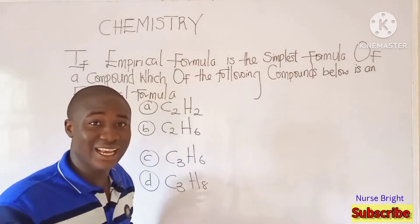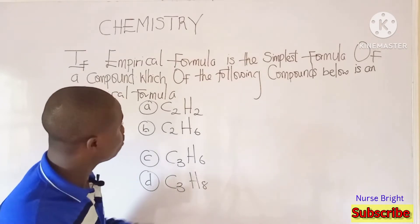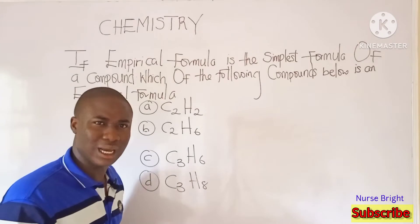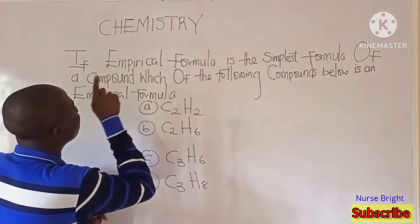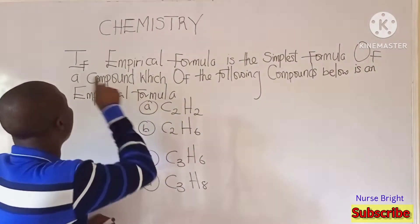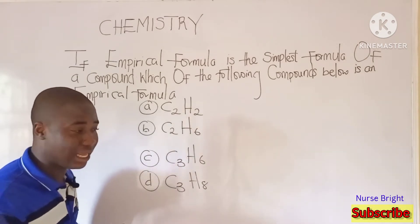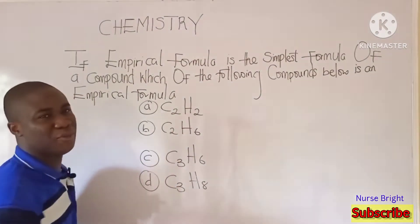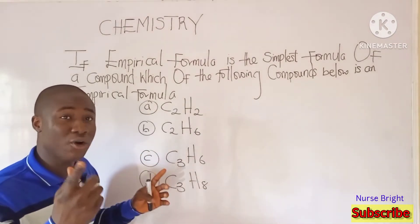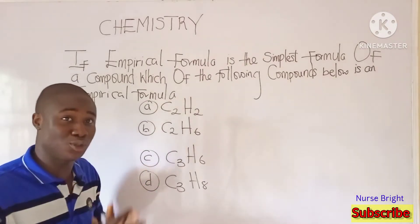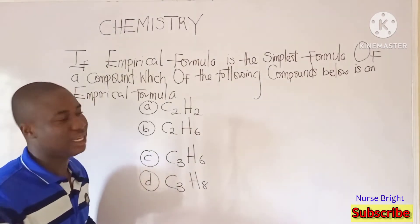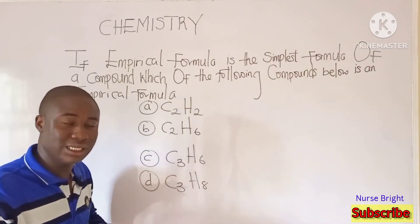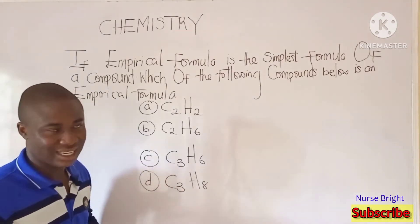You can see this question written on the board. I know you've already chosen an option, but let's check which is the correct one. Recall that empirical formula is the simplest form a compound can exist. The question asks: which of the following compounds below is an empirical formula? These types of questions are very likely for the post-UTME examination for various universities and also for JAMB and WAEC candidates.